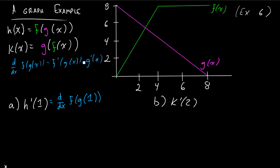And so in a lot of my other videos I've been writing times d over dx of g of x, and this is just another way to write that. So we're going to follow that through here. We're going to say, well, by the chain rule, this value here is equal to f prime of g of 1 times g prime of 1.